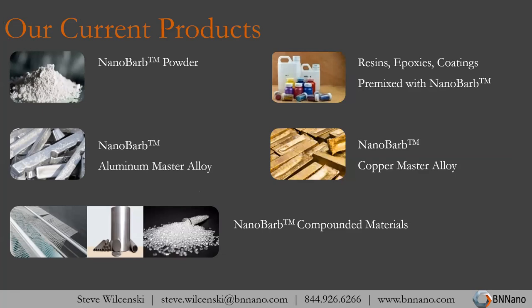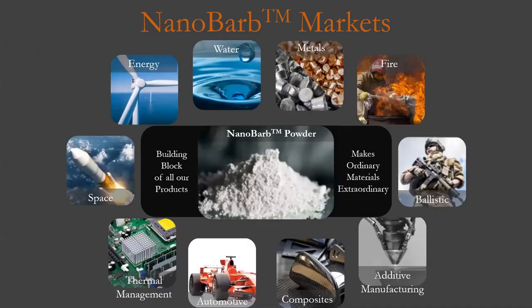Our current products are mostly in powder form, and can also be in batches of resins and epoxies. We're also creating our own master alloys for metals. Our market is broad — some have suggested we focus on one or two sectors, but we haven't done that because our basic product, the powder, can be used for all these applications without needing a different type of nanobarb for each use case. We have touch points across the US DOD and international companies in all of these segments.